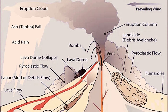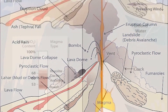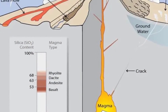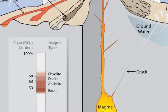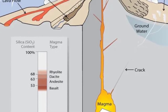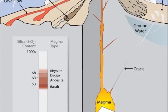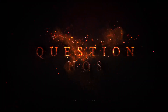Fumaroles: holes, cracks, or fissures on the surface near volcanoes that emit steam and volcanic gases such as sulfur dioxide and carbon dioxide. Fumaroles create pathways for rising heat, volcanic gas, and magma. Cracks and fumaroles act like a window so scientists can get a glimpse of the gases inside volcanoes.